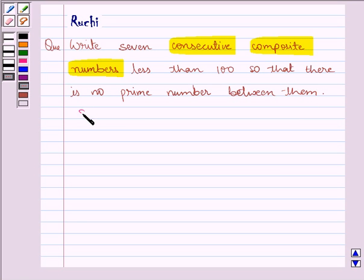Now let's start with the solution. Consecutive means adjacent numbers and the numbers having more than two factors are called composite numbers.